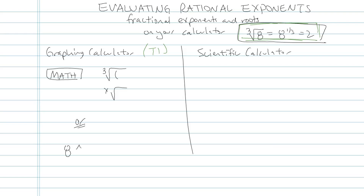If I wanted to do the cube root of 8, I would arrow down until I've darkened cube root of x, and then I'd hit 8, and then I'd hit enter. That would give me 2. Or if I wanted to try the 4th root of something, from my home screen I could type in 4, and then the math button, go down to that x root parenthesis thing. Let's do the 4th root of 81 — if you do the 4th root of 81, you should get 3.